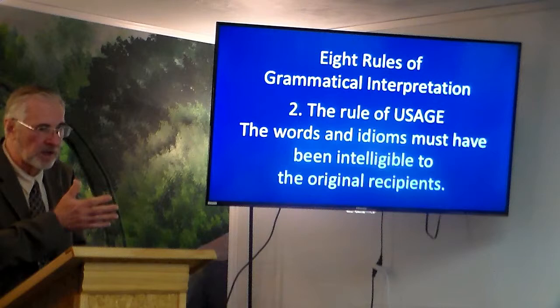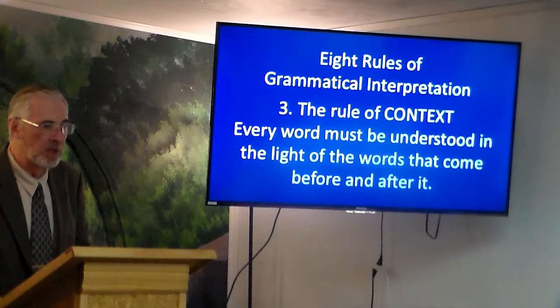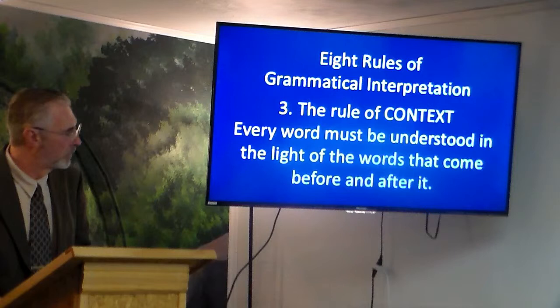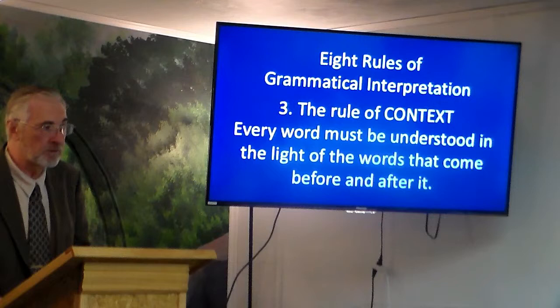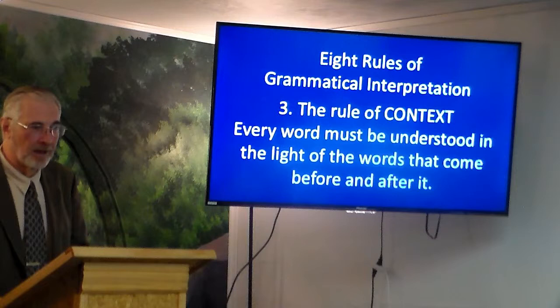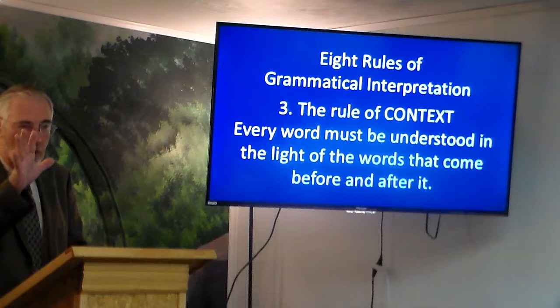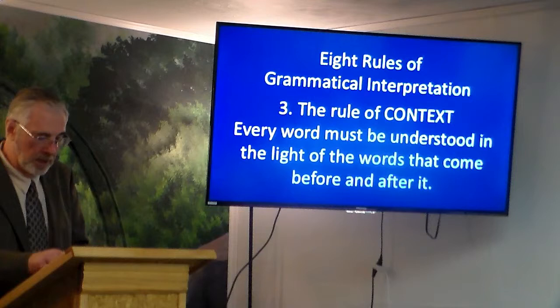Number two, the rule of usage: what did it mean when it was used? It had to make sense to them back then, whether it was spoken to Adam and Eve, at the time of Moses, or at the time of Christ. Number three, the rule of context: every word must be understood in the light of the words before and after it — immediately before and after, but also the remote context. The whole Bible is in context as a unit, even though it's made up of 66 different books by about 40 different authors, different continents, different times. It is one unit because there is one overall author — the Holy Spirit guiding these people to write.